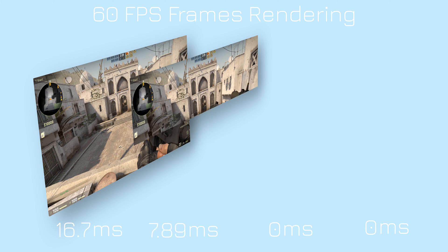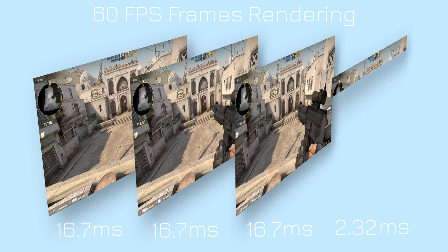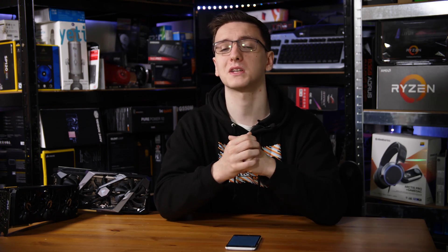Essentially, the PC renders one frame and pushes it to the display. The very millisecond that frame is done, the timer starts and the PC gets to rendering the next one. As soon as that frame is done and ready to be pushed to the display, the timer stops and you've got a frame time result for that frame. Frame times are really just a stopwatch for how quickly your PC or console can render a frame — and the quicker it can do it, the smoother and more enjoyable your experience will be.